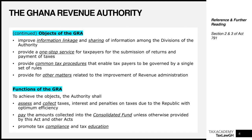Another objective was to provide a one-stop service for taxpayers for the submission of returns and payment of taxes. In the past, you had to go to the VAT Service to file your VAT return and to the IRS to file your Company Income Tax return. Now you can walk into one Ghana Revenue Authority office and file both your VAT return and your Company Income Tax return. GRA has clearly accomplished this objective.